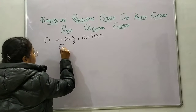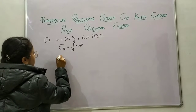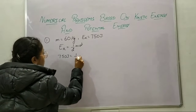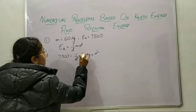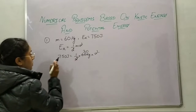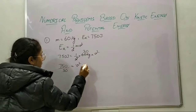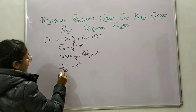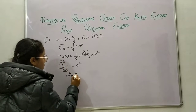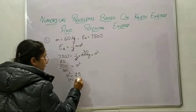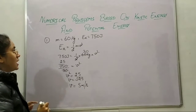The formula of kinetic energy is half mv squared. We have kinetic energy as 750 joule, so: 750 = (1/2) × 60 × v². The 2 cancels with 60 giving 30, and 30 comes to the other side dividing 750, giving 25. So v² = 25, and v = √25 = 5 meters per second.